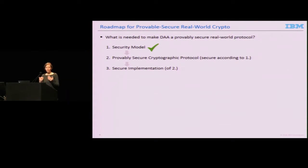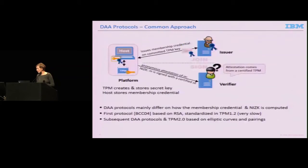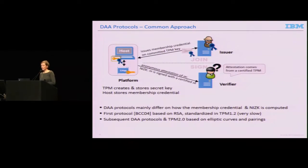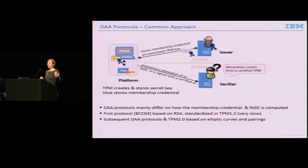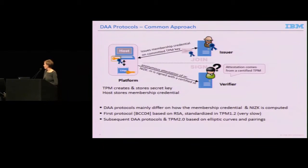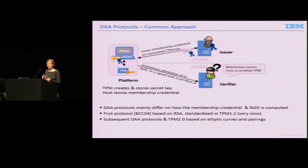Now the task is to find a cryptographic protocol provably secure in that model. DAA protocols all work with a similar structure. The TPM first generates a secret attestation key and gets a blind signature on that key by the issuer, which could be a TPM manufacturer or other entity. It's crucial that the issuer does the signature in a blind way. When the TPM wants to make attestations, it proves that it signs a message with the secret key and holds a membership credential on that key, but does it in a zero-knowledge way without leaking information about the key or credential.